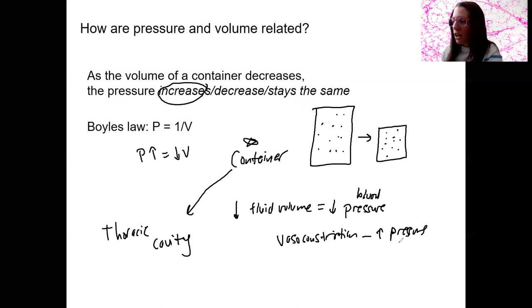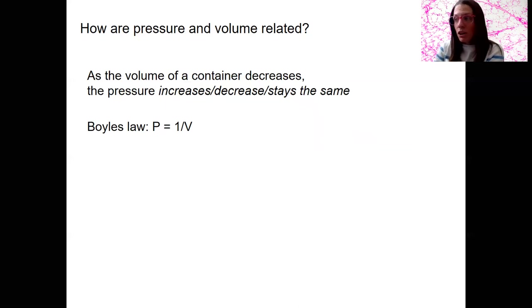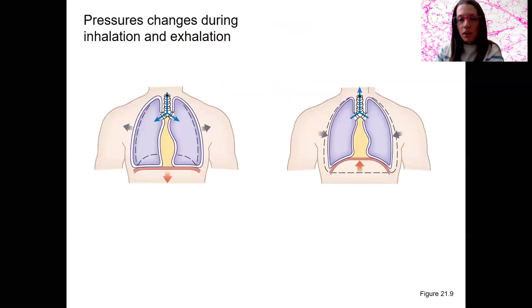So let's look at how this applies to what we already talked about with the lungs, with inhalation, exhalation. With this scenario here, remember we had the diaphragm contract. We had the external intercostals contract. This is going to result in increased volume in the thoracic cavity.